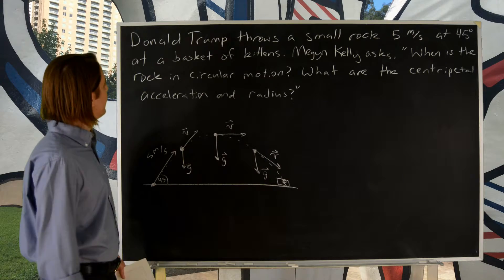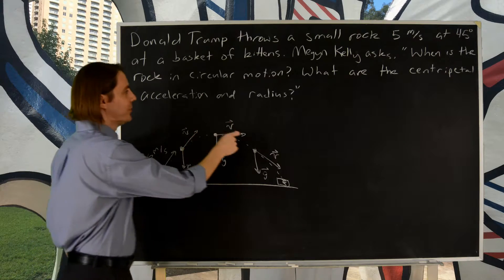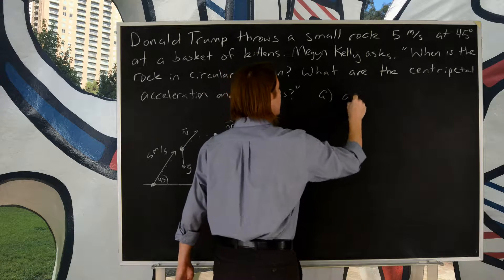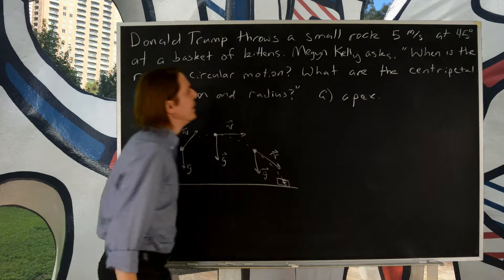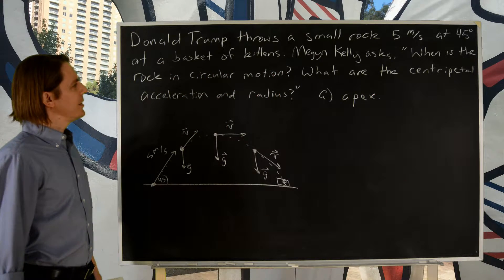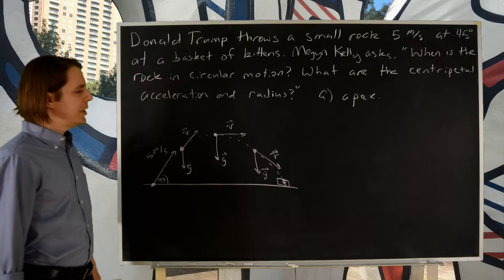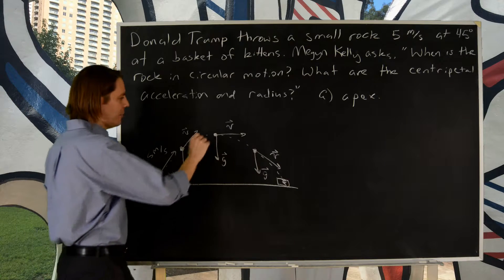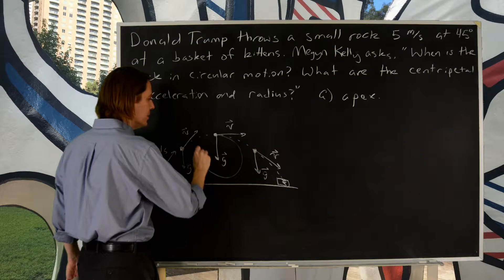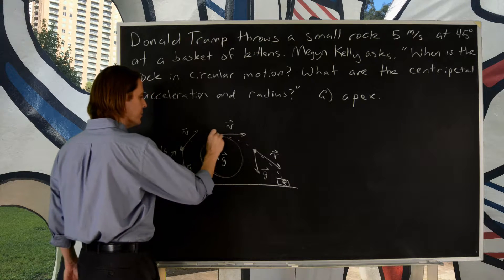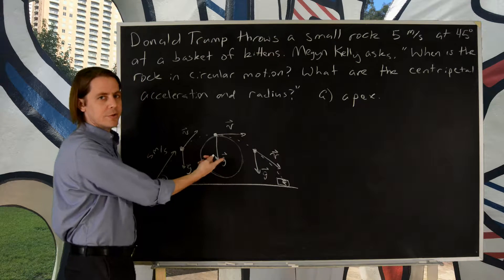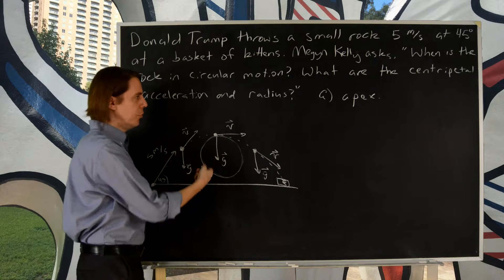So that's the answer to the first part. When is it in circular motion? At the apex. So part A, at the apex of its motion. But then, Megyn Kelly wants to know, what are the centripetal acceleration and the radius? Well, if we just imagine this is circular motion, the centripetal acceleration is just the acceleration due to gravity, pointing straight down.